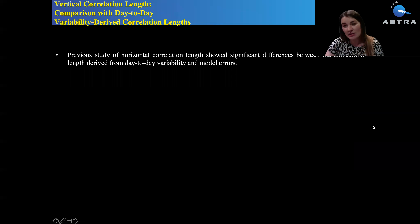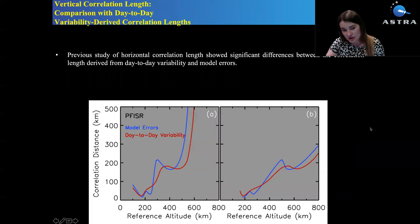The previous study for the horizontal component of the covariance matrix construction demonstrated that we cannot use day-to-day ionospheric variability as a proxy for modeling of covariance matrix. But actually the same analysis was done using day-to-day variability, where it was determined as the density at a particular time frame minus the density at the same time frame of the previous day. The same correlation analysis was done. You see how the model errors are shown with blue line. These are the correlation distances found using model errors and the red line shows the correlation distances found using day-to-day variability.